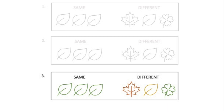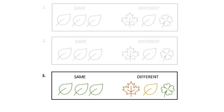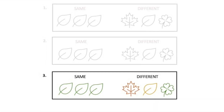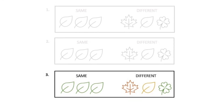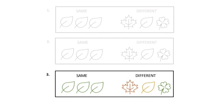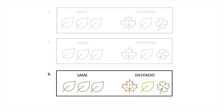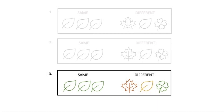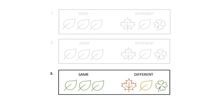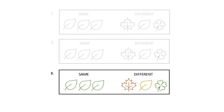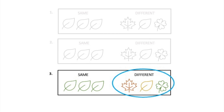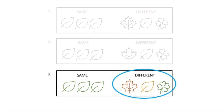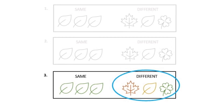Now here's box number three. Here's box number three again. Did you color the three leaves that are different? Then you were right. Those were three different notes.